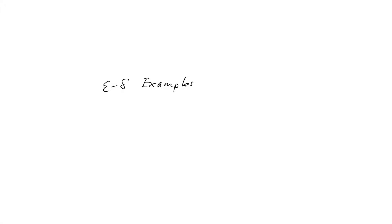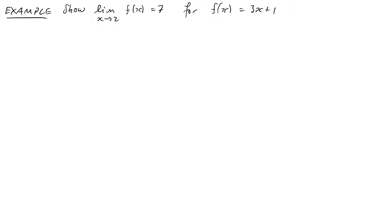Welcome back. In this video we're just going to do a couple of quick examples using the epsilon-delta characterization of the limit of a function, just to practice showing how it works and how we attack problems like this. We'll start with a pretty straightforward one: to show that the limit as x tends to 2 of f(x) equals 7, where f(x) = 3x + 1.